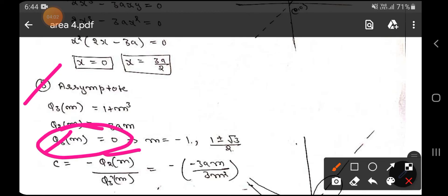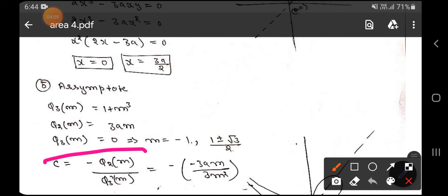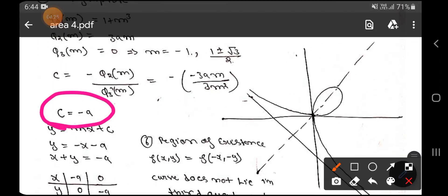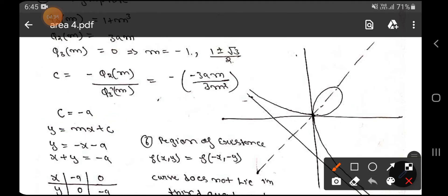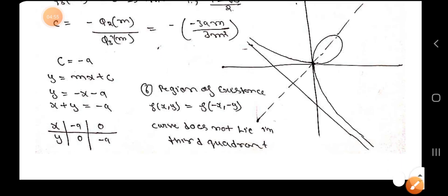Setting φ₃(m) = 0 gives m = −1 (and also the complex roots (−1 ± √3)/2). Then c = −φ₂(m) / φ₃′(m). Substituting the values of φ₂(m) and φ₃′(m) and simplifying, we get c = −a. With m = −1 and c = −a, the equation of the asymptote y = mx + c becomes x + y = −a.